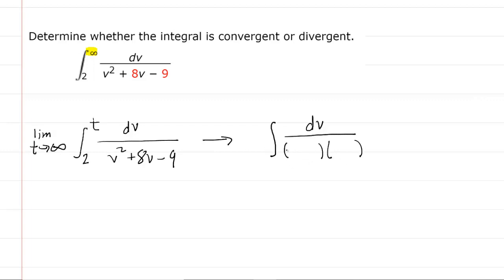And when factoring, the v squared decomposes into v times v. We need two numbers that add to make 8, but also multiply to make negative 9. And perhaps plus 9 and minus 1 would work because those certainly add to make 8, but they also multiply to make negative 9.